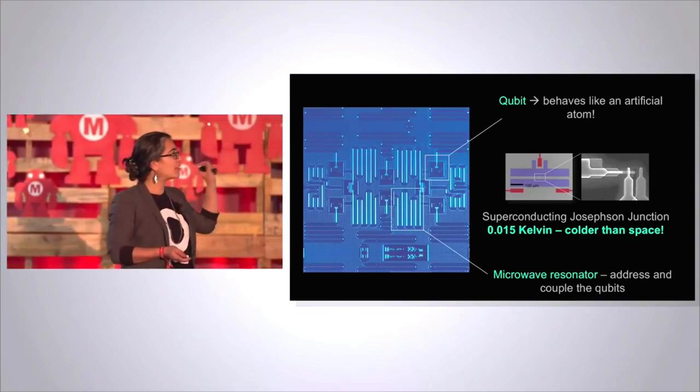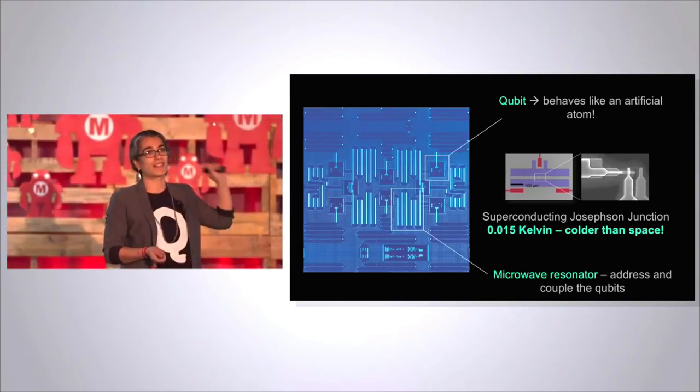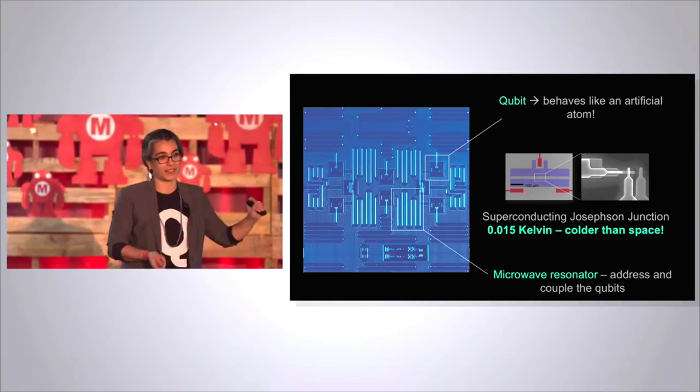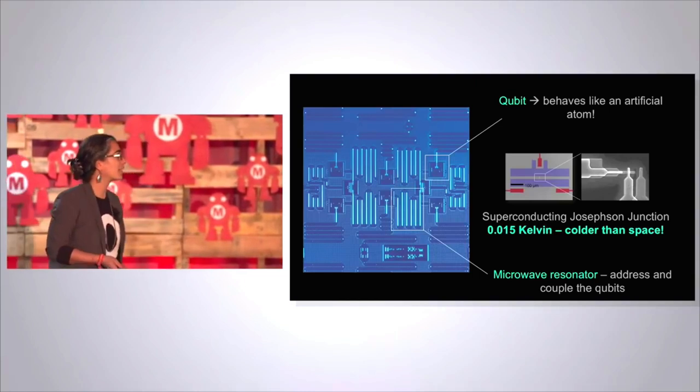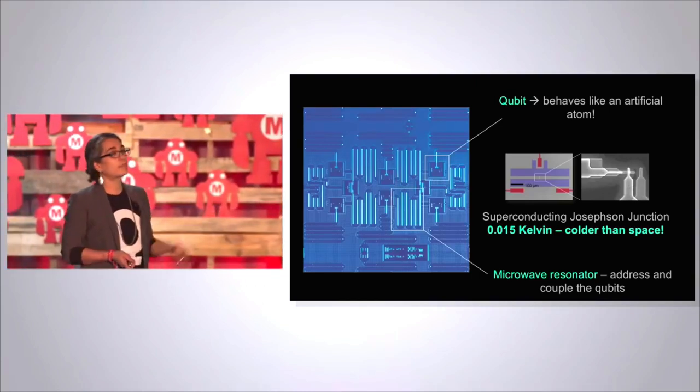And we got to cool this thing down to 0.015 Kelvin, where zero is absolute zero. Room temperature is 300. This is significantly colder than outer space. And we talk to the qubits with microwaves.